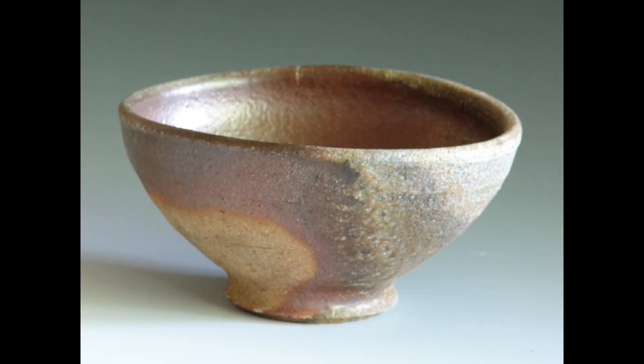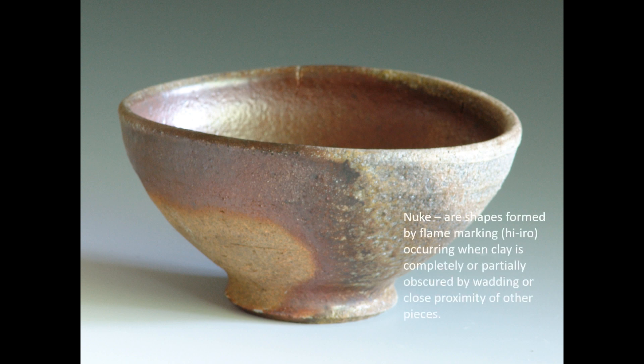This is a different thing. This is called Nuke. Nuke are the shapes that are formed by flame marking — the Hiro. The actual shapes take place when the clay is either completely or partially obscured, either by wadding or by being very closely placed near another piece, with the ash obstructed by the piece's placement. Here are some examples of Nuke.